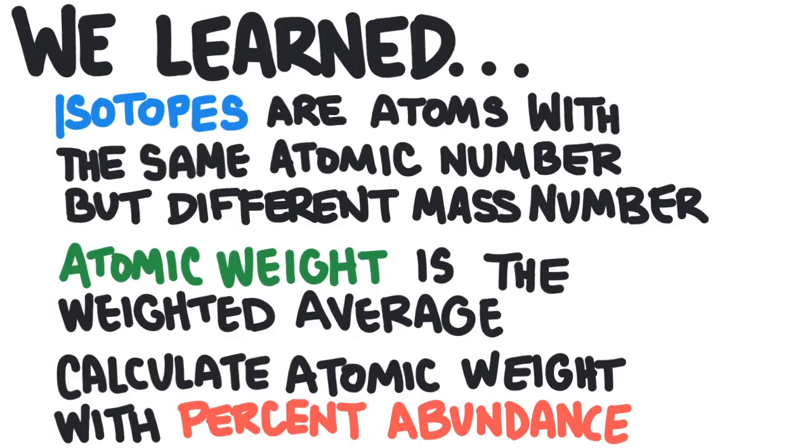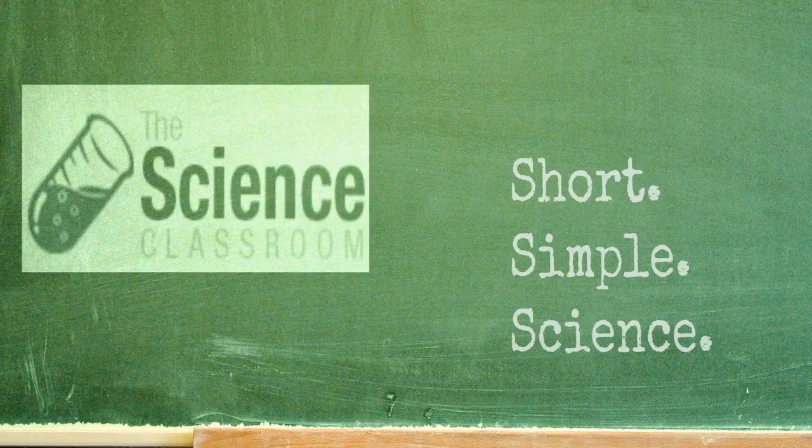So in this video, we learned that atoms with the same atomic number but a different mass number are called isotopes. Atomic weight is the weighted average of all the masses of different naturally occurring isotopes for an element. You could calculate the atomic weight of an element by using the percent abundance of the naturally occurring isotopes to calculate the weighted average.